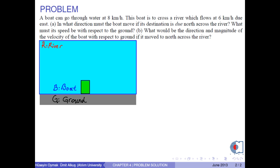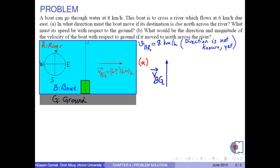A boat can go through water at 8 km per hour. This boat is to cross a river which flows at 6 km per hour due east. In what direction must the boat move if its destination is due north across the river?